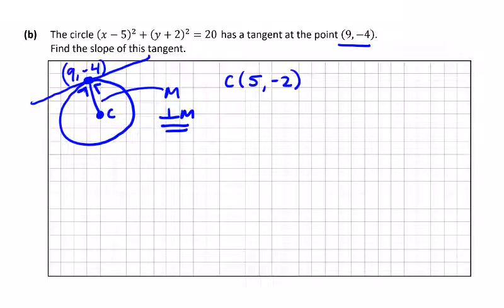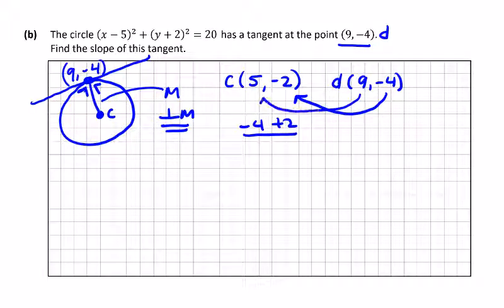So we need the slope of c, 5 minus 2, and we call this the point d, 9 minus 4. So minus 4, y2 minus y1, so plus 2, over 9 minus 5. Using the equation here, is equal to minus 2 over 4, which is equal to minus 1 over 2.